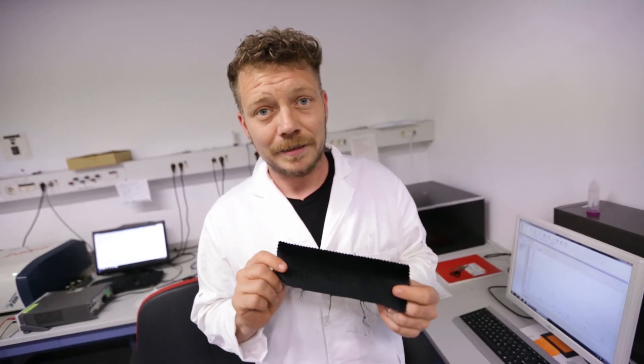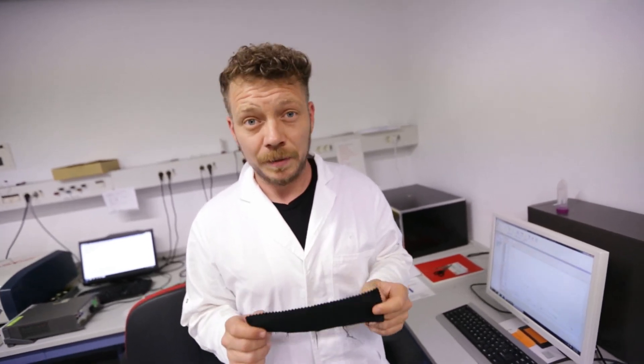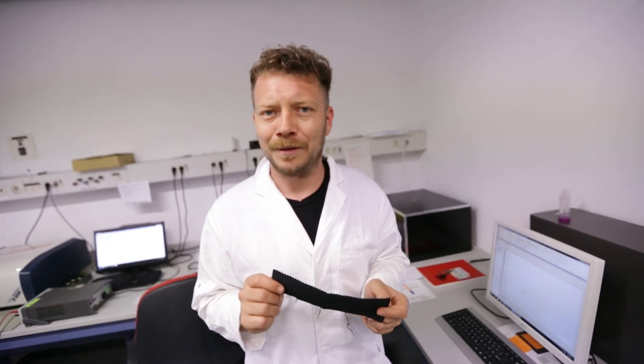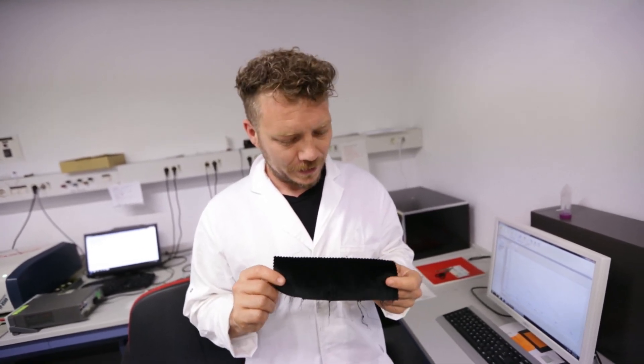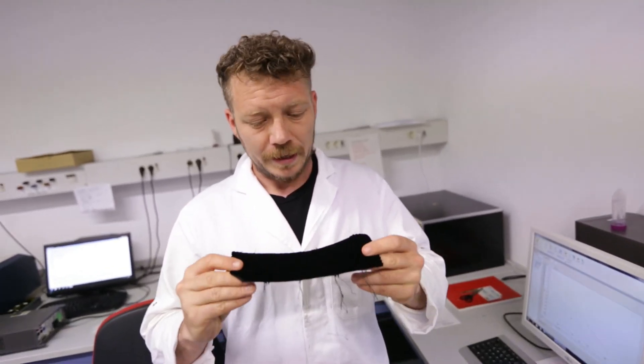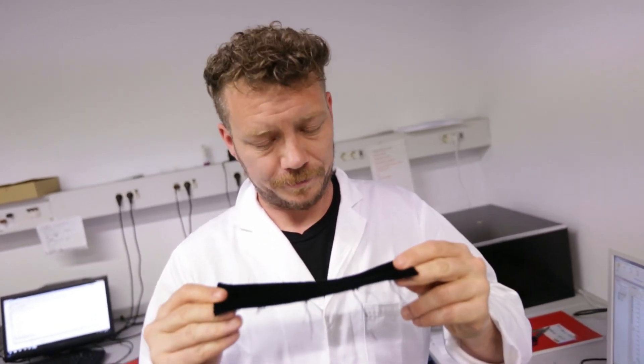Now this is the blackest fabric we could find. It has been tested by NASA to be the blackest. Interestingly because they wanted to recreate the moon landing. But you see it's first not flexible so you can't use it as a t-shirt and also it's very different depending on from what angle you look at it. But we'll test it.